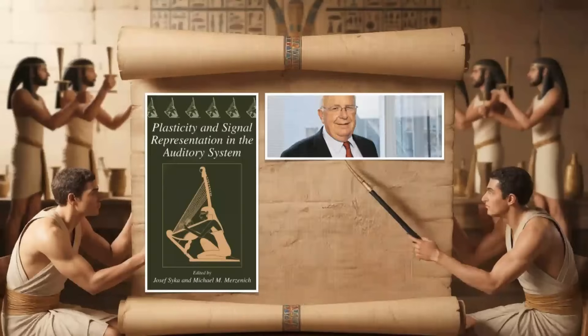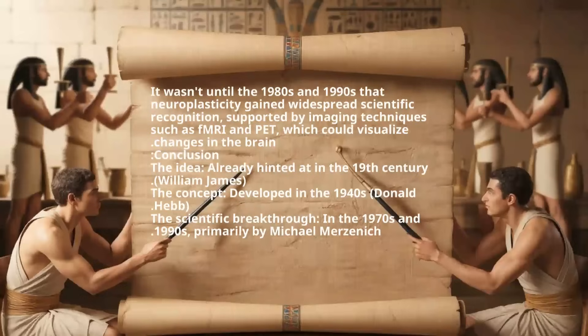Michael Merzenich, 1970s–2000s, an American neuroscientist often referred to as the father of neuroplasticity, demonstrated through animal and human studies that the brain can be reorganized even in adulthood, for example in the retraining of sensory perception after injury. He also developed programs to enhance brain performance, e.g., Brain HQ. It wasn't until the 1980s and 1990s that neuroplasticity gained widespread scientific recognition, supported by imaging techniques such as fMRI and PET, which could visualize changes in the brain.